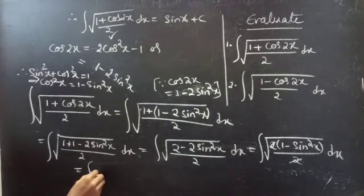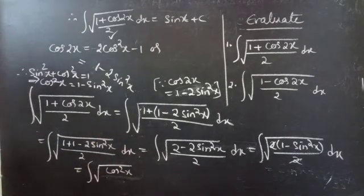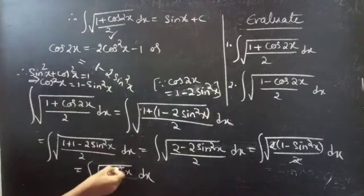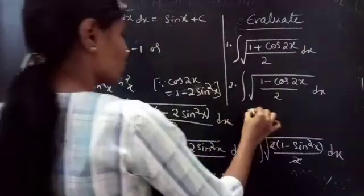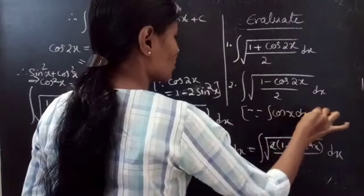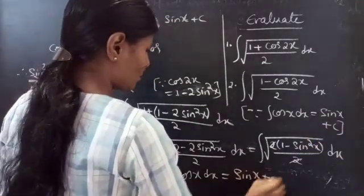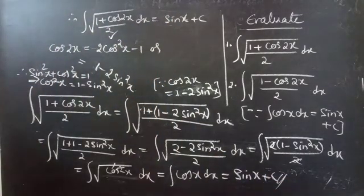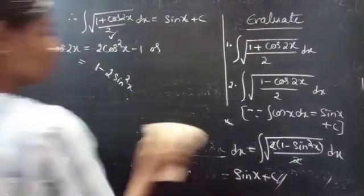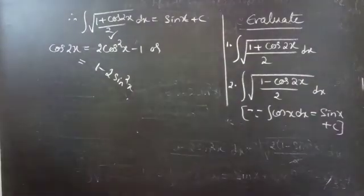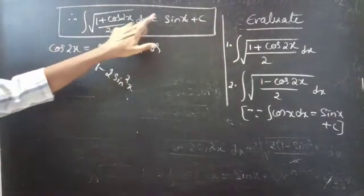We replace 1 minus sin²x with cos²x, so this equals the integral of square root of cos²x, dx. The square and square root cancel, so this equals the integral of cos x dx, which equals sin x plus c — the same answer. Therefore, the integral of square root of (1 plus cos 2x) divided by 2, dx equals sin x plus c.